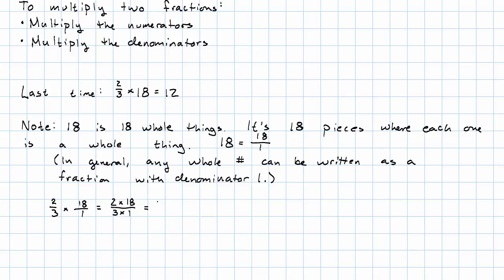2 times 18, that's 36. 3 times 1, that's 3. You know what we want to do now, though. We can divide the numerator by 3 and also divide the denominator by 3.